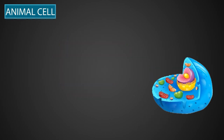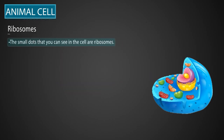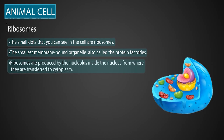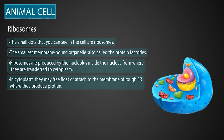Now let's learn about ribosomes. These are small dots you can see in the cell, and these are called ribosomes. These are the smallest membrane-bound organelle, and they are called the protein factories. Ribosomes are produced by the nucleolus inside of the nucleus, from where they are transferred into the cytoplasm. In the cytoplasm, they may free-flow or attach to the membrane of the rough endoplasmic reticulum, where they produce protein.